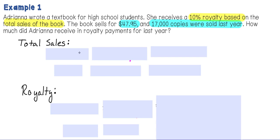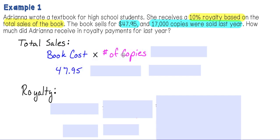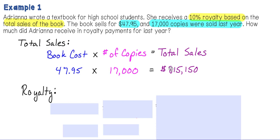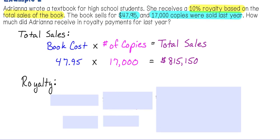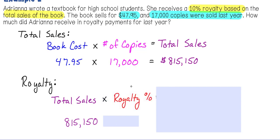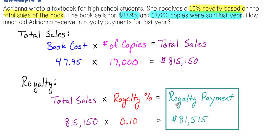To find total sales, we take the book cost of $47.95 and multiply it times the number of copies sold, which is 17,000. That gives us total sales of $815,150. After we know the total sales, we multiply it times the royalty of 10% — remember to change that into a decimal — and that gives her a royalty payment of $81,515.